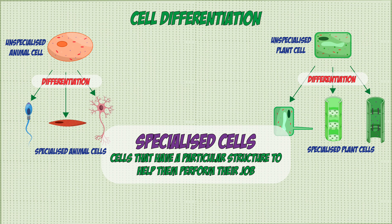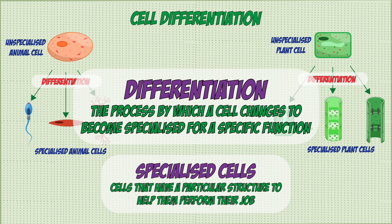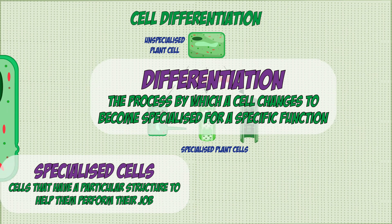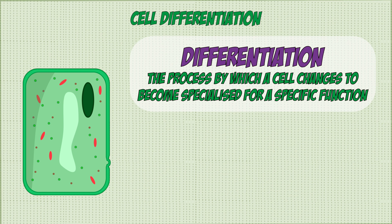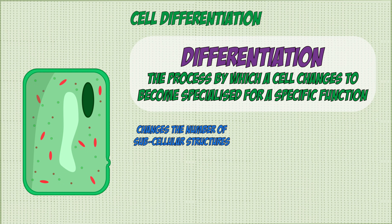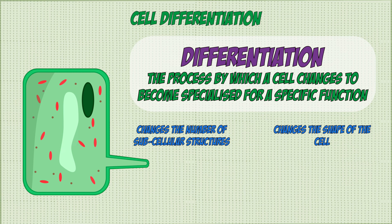Differentiation is defined as the process by which a cell changes to become specialized for a specific function. This process involves the cell developing different numbers of subcellular structures, such as mitochondria and ribosomes, and sometimes even changing its shape so that it can carry out its specific job better as a specialized cell.